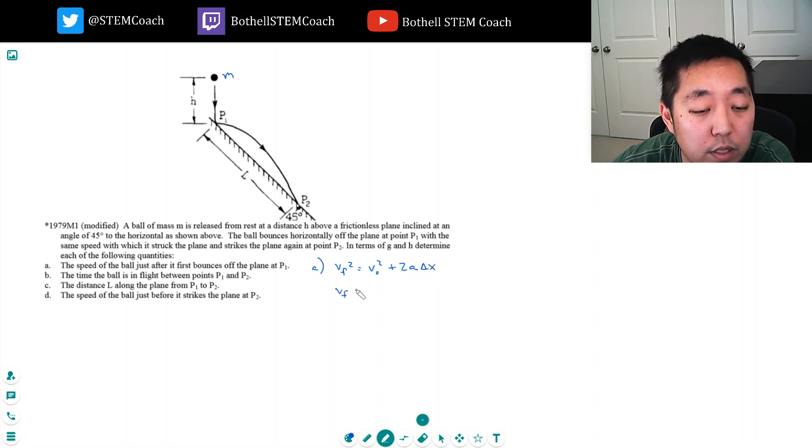So v_f, which is what I'm solving for, well this velocity doesn't have any initial velocity because I'm dropping it, plus 2gh. So it's the square root of 2gh. That's what the final velocity is here.